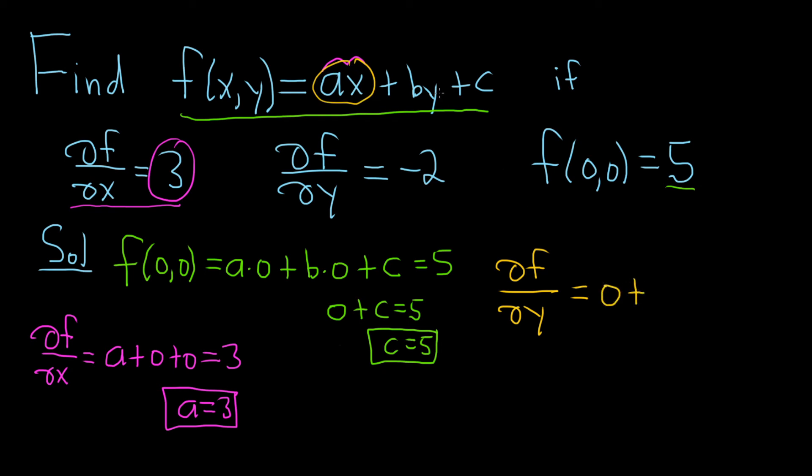So the derivative here of ax will be 0, plus the derivative of y is 1, and the b is a constant, so it just hangs out. So you just get b times 1, which is b, and the derivative of c is 0. And this is equal to, looks like, negative 2. So we have b equals negative 2.